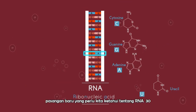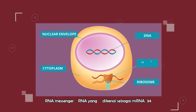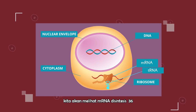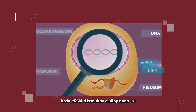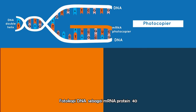We need to know about RNA because we will see it when learning about protein synthesis. There are two special types: messenger RNA, known as mRNA, and transfer RNA, known as tRNA. The mRNA is synthesized inside the nucleus, copied from the DNA code. The tRNA is found in the cytoplasm.